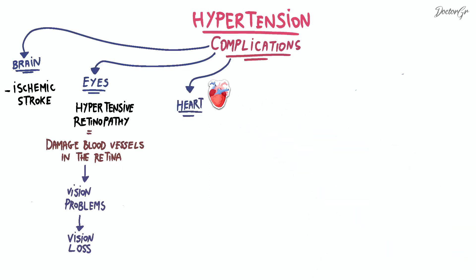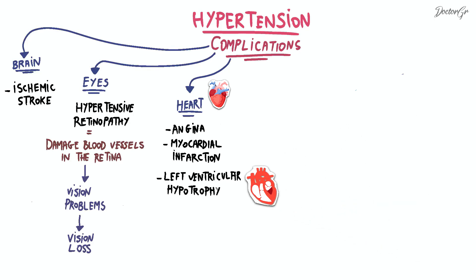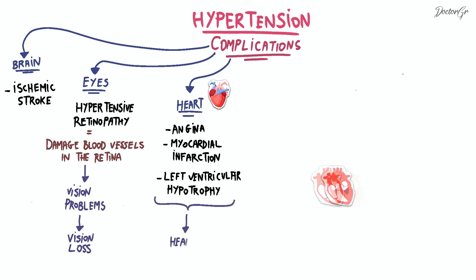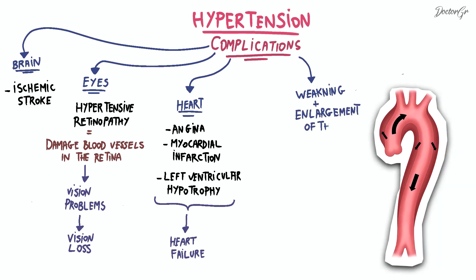In the heart, hypertension puts extra strain on the heart, which can result in several cardiovascular complications including chest pain, heart attack due to blockage of blood flow in the heart muscle, left ventricular hypertrophy or enlargement of the heart's main pumping chamber, and heart failure — the heart's inability to pump blood effectively.